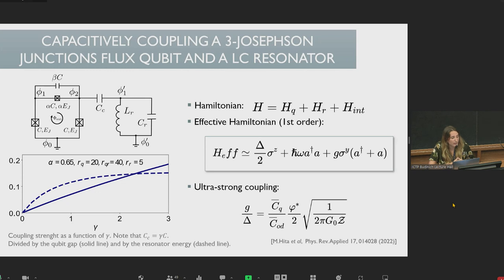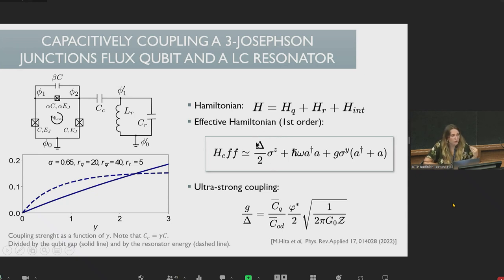We study the capacitive coupling between a three Josephson-Junction flux qubit and an LC resonator. Following circuit quantization rules, the general Hamiltonian is given by the Hamiltonians of the qubit and resonator plus interaction terms. Using the Schrieffer-Wolff transformation, we derive the effective Hamiltonian: the qubit Hamiltonian with renormalized delta, the resonator Hamiltonian in terms of creation and annihilation operators, plus an interaction term in a direction perpendicular to that found for inductive coupling between a flux qubit and a resonator. This provides evidence of ultra-strong coupling with magnitudes above 12% of the qubit and resonator energies.